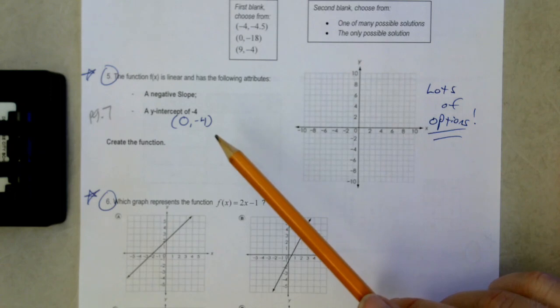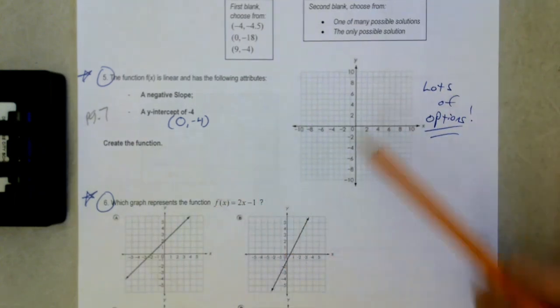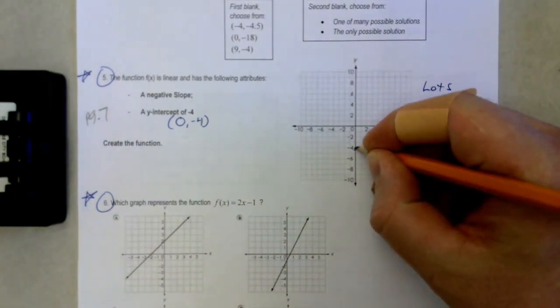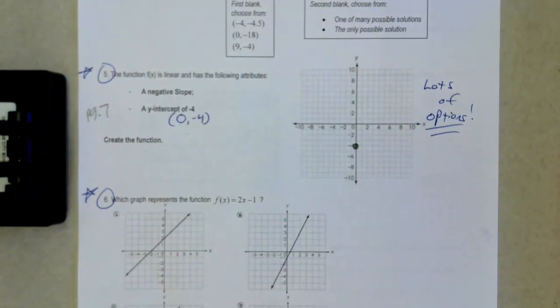The second attribute is that it has a y-intercept of negative 4. That means it crosses the y-axis at negative 4. So that coordinate point is 0 comma negative 4. So let's just draw a point right there on my y-axis of negative 4.